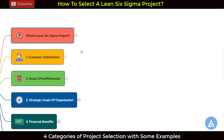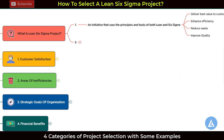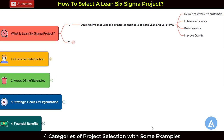What is the Lean Six Sigma project? It is an initiative that uses the principles and tools from both Lean and Six Sigma — a focused and structured approach. The final goal is to deliver best value to our customers, enhance efficiency, reduce waste and variation in our processes, and thereby improve the quality of the products or services we supply to customers.